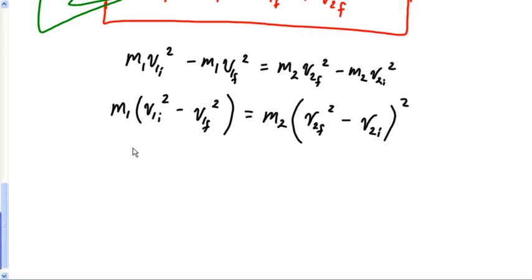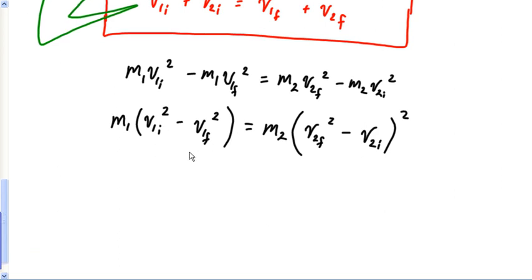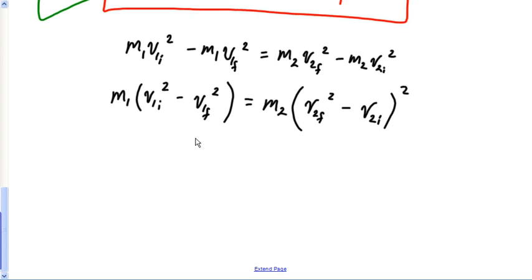So I'm going to subtract this guy from both sides. So minus M1 V1 final square equals, and get all my M2s on the other side. So on the other side, I'll have M2 V2 final square minus M2 V2 initial square. And now what I'm actually going to do is, and this is where we get a little algebraic, and hopefully if you're in a physics class, that's not an issue. But I'm going to factor the M1s out. So let's factor the M1s out.